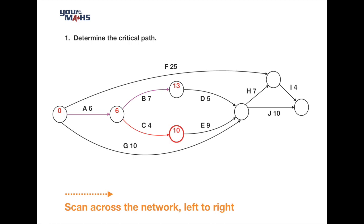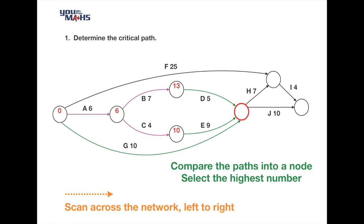The next circle has three lines coming into it from tasks D, E, and G. We consider each path separately and look for the highest number, because all tasks must be completed before we can proceed. Along task D: 13 plus 5 equals 18. Along task E: 10 plus 9 equals 19. Task G alone takes 10 days. The highest number - meaning when all jobs are done - is 19 days, so we record 19 at that circle.